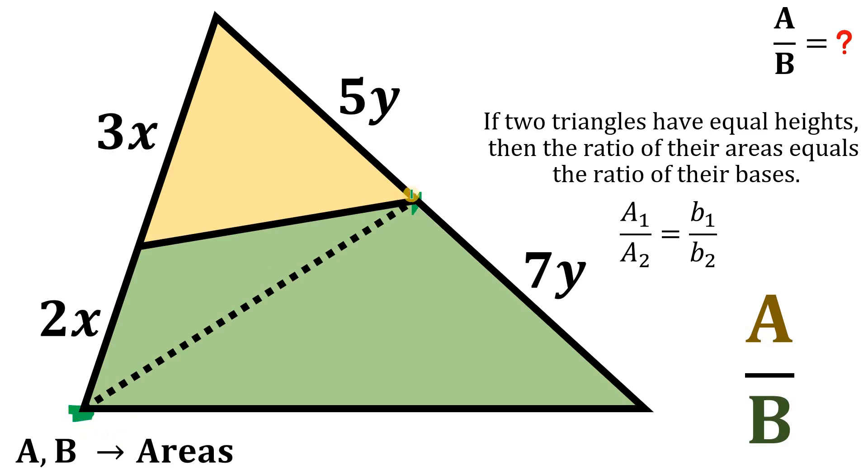Now, focus on this triangle, this point, this triangle, with the base 3x and 2x. Now, these two triangles have the same height. Therefore, the ratio of their area is simply equivalent to the ratio of their bases. So the ratio of their area is simply equal to 3 is to 2.